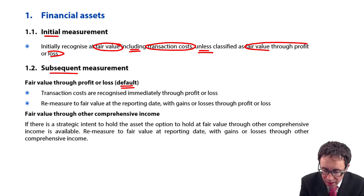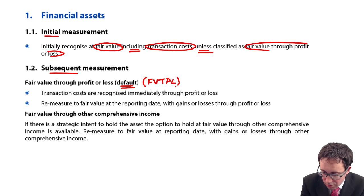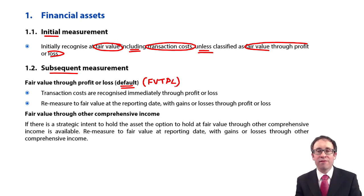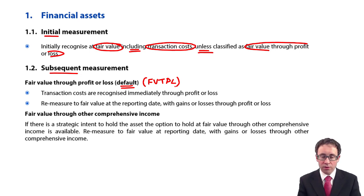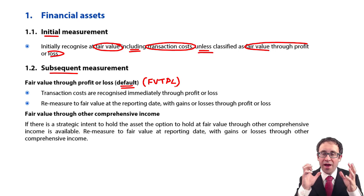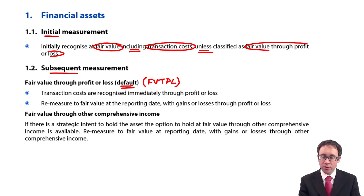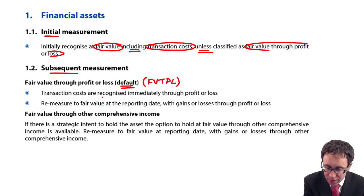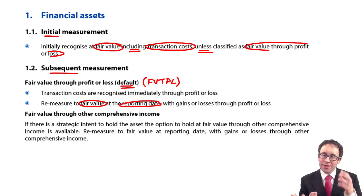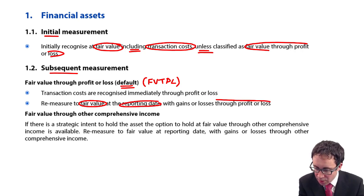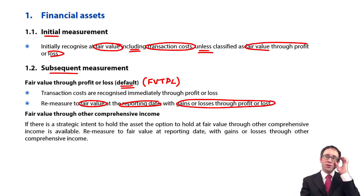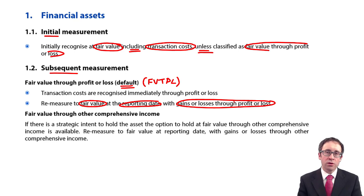Fair value through profit or loss, sometimes abbreviated to FVTPL, is the default category for any equity shares that you have. Because it's fair value through profit or loss, transaction costs go through profit or loss immediately. But then you remeasure to fair value at the reporting date, and your gains and losses go through profit or loss — hence why it is called fair value through profit or loss.